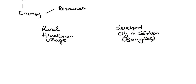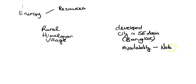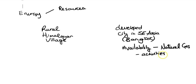So what kinds of resources? First of all, we look at availability. What's available in Thailand? Natural gas - so a lot of our electricity and certainly for cooking. What kind of activities are we using it for? We can go through that. And then the other availability that Thailand has is water, so we've got lots of hydroelectric.